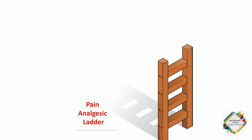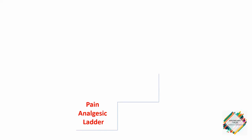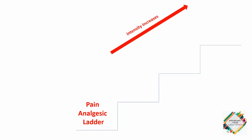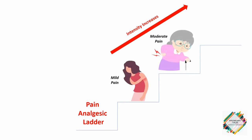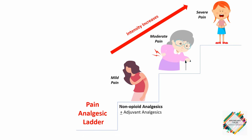The pain analgesic ladder is basically progressed in three steps based on the intensity with which the pain increases. The three stages are mild pain, moderate pain, and severe pain. In case of mild pain, we usually initiate with non-opioid analgesics with or without adjuvant analgesics.